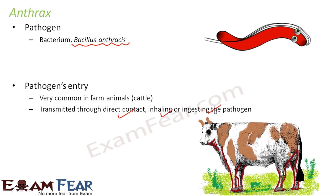The bacteria can enter through contaminated food or water, or through air. If one cow is suffering from anthrax, there are chances that another cow nearby might also get the same disease. It can also be transmitted through direct contact. Therefore, an animal suffering from anthrax should be kept in isolation from all other animals.